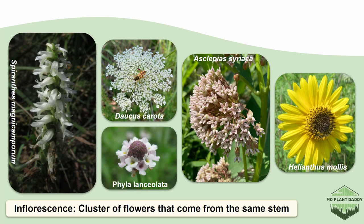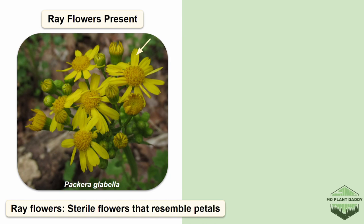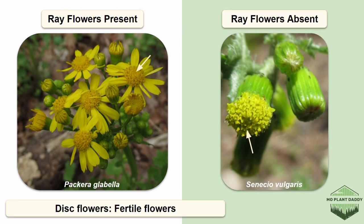You may have heard of an inflorescence, which is a cluster of flowers that comes from the same stem or peduncle. Inflorescences can be many different shapes, ranging from more spike-like to ball-shaped. A sunflower is actually a whole bunch of small flowers. Ray flowers are sterile flowers that resemble petals and are typically on the edge of a flower head, whereas disc flowers are fertile flowers and typically form a disc in the center of a flower head.